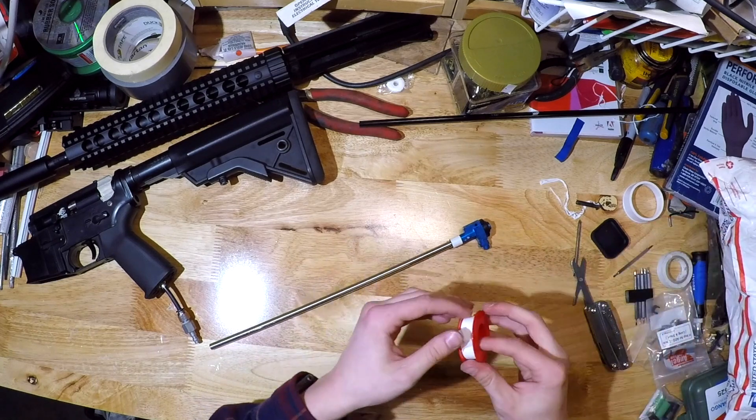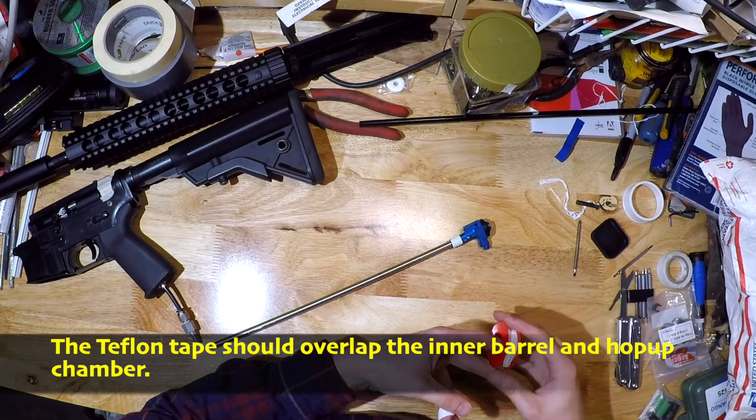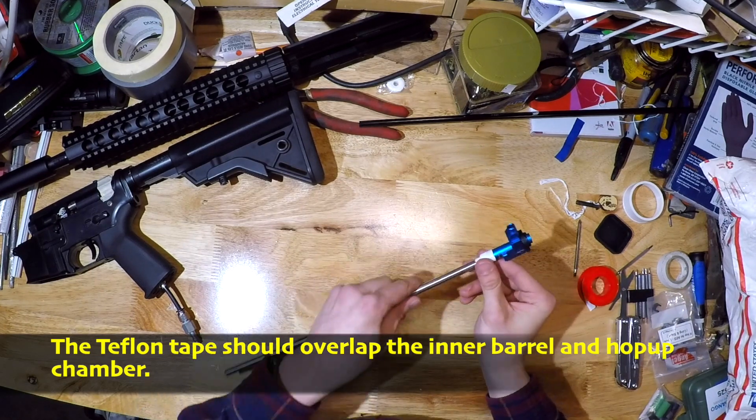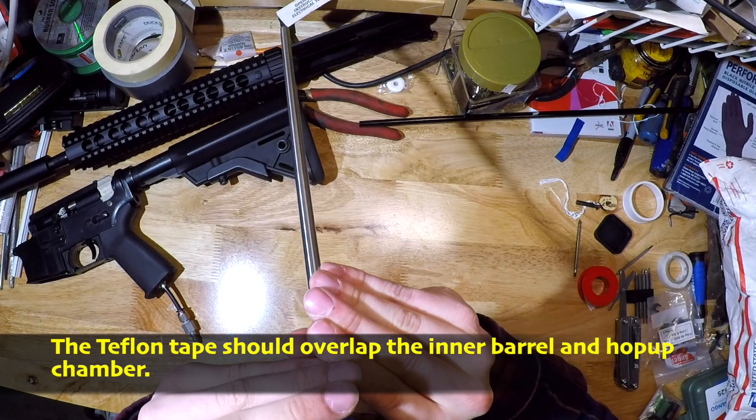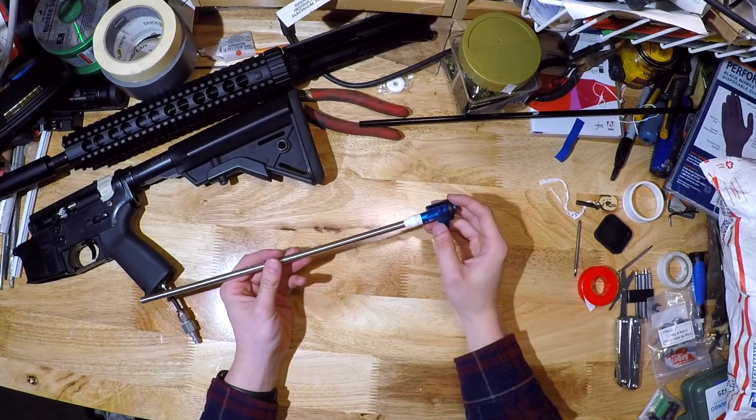There we go. And then provide some air seal in case any air escapes. I also wrap the front with Teflon tape. There we go. Now if we check, it's perfectly centered. So that's my method for making sure your hop up chamber and your hop up bucking are perfectly centered.